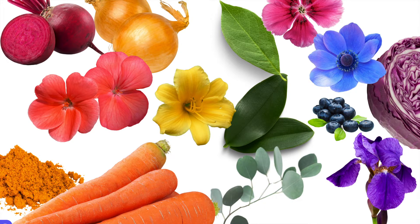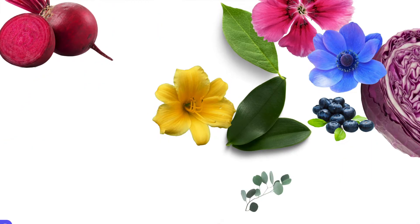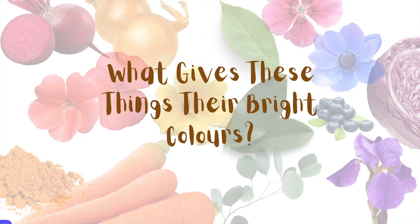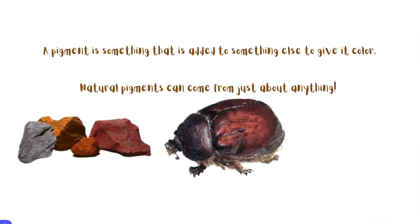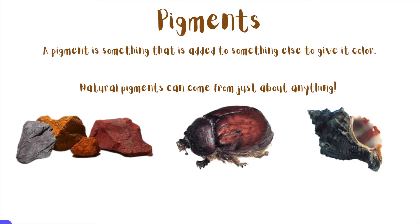You may have noticed that different natural materials in your environment have different colors. What gives these things their bright colors? It's something called pigments. A pigment is something that is added to something else to give it color, and it can also be naturally occurring in different plants, animals, rocks, or minerals. So natural pigments can come from just about anything.